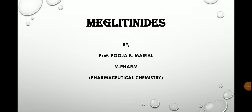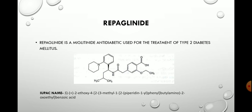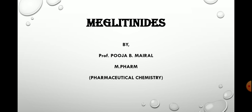Hello and welcome to medicinal chemistry classes. Today we will discuss the next class of anti-diabetic agents, that is meglitinides. Meglitinides is a class of drug used to treat type 2 diabetes mellitus. It is an oral medication. Meglitinides work by stimulating the pancreas to release insulin in response to a meal.